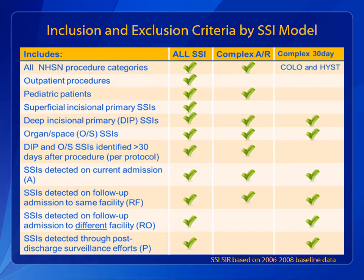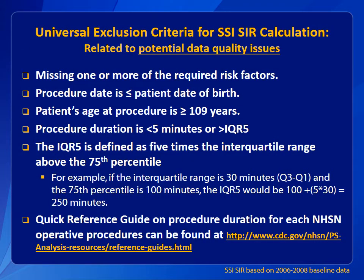Each of the SSI models has a set of features that determine whether procedures and events will be included or excluded from the SIR calculation. Here is a comparison of SSI models. Use this table to determine what is included or excluded from your SIR reports. For complex AR and complex 30-day models, some procedures and events are excluded. Here is a list of universal exclusion criteria applied in SSI-SIR calculation. These criteria will apply regardless of the SSI model and are related to potential data quality issues.